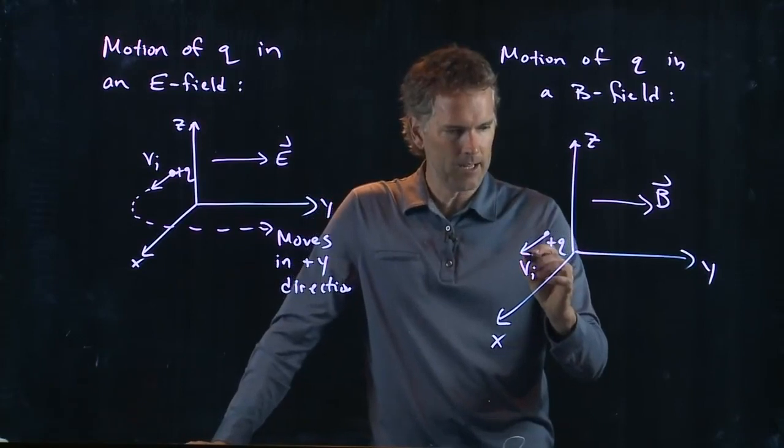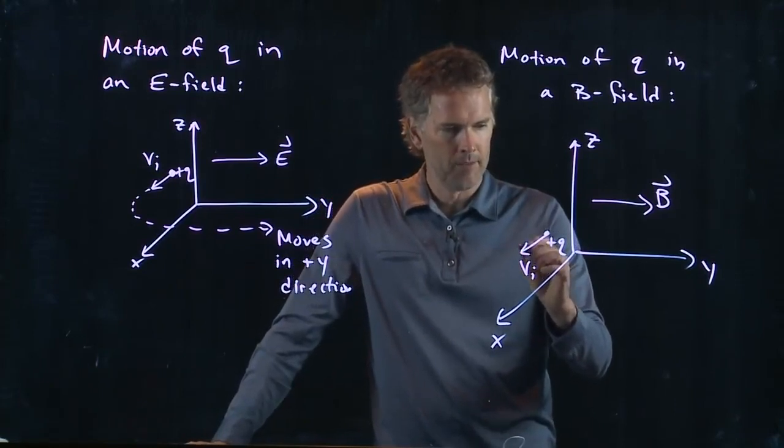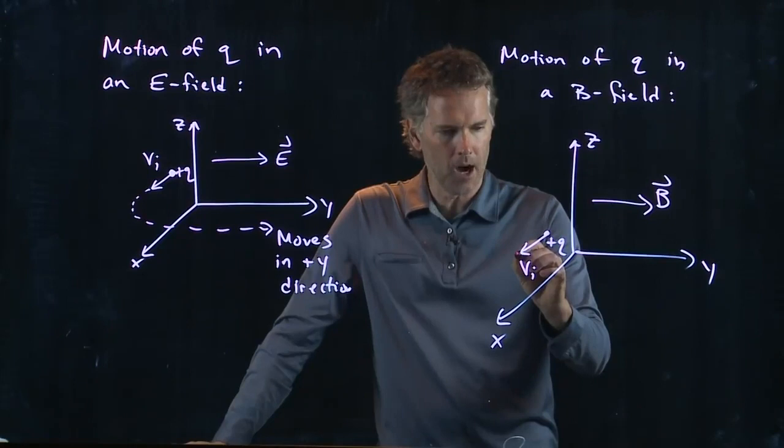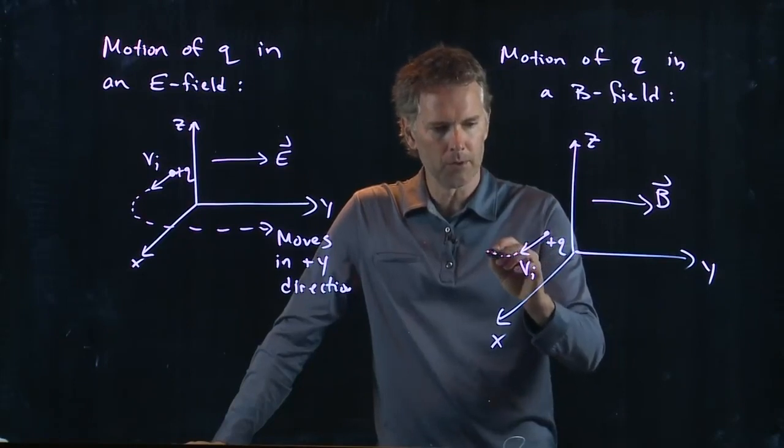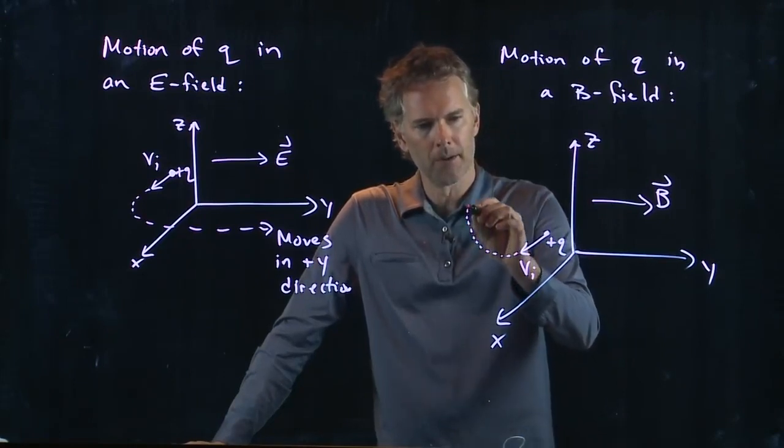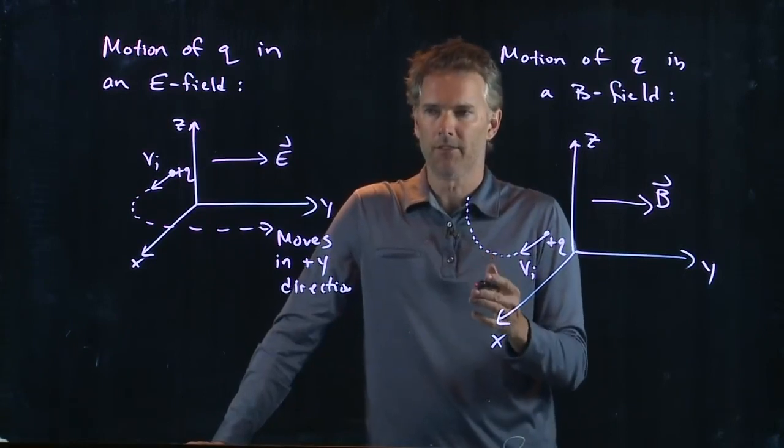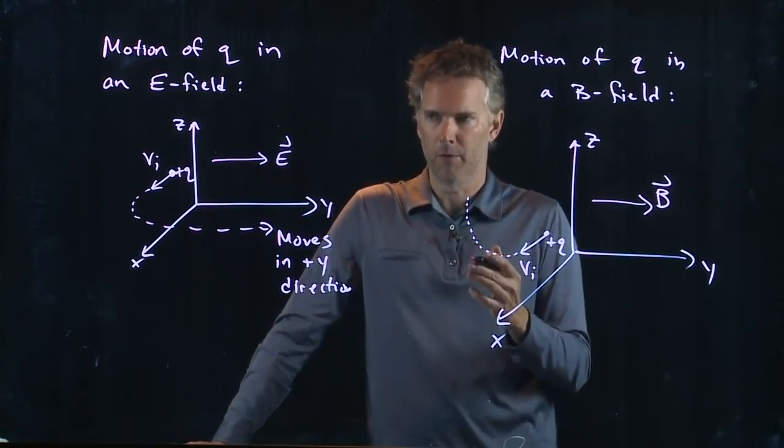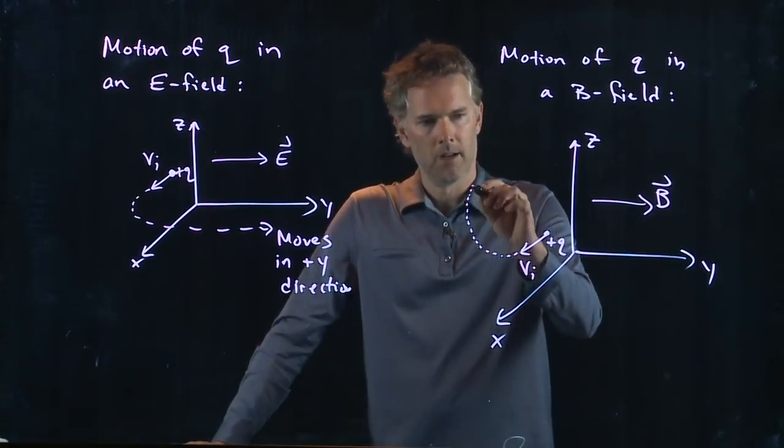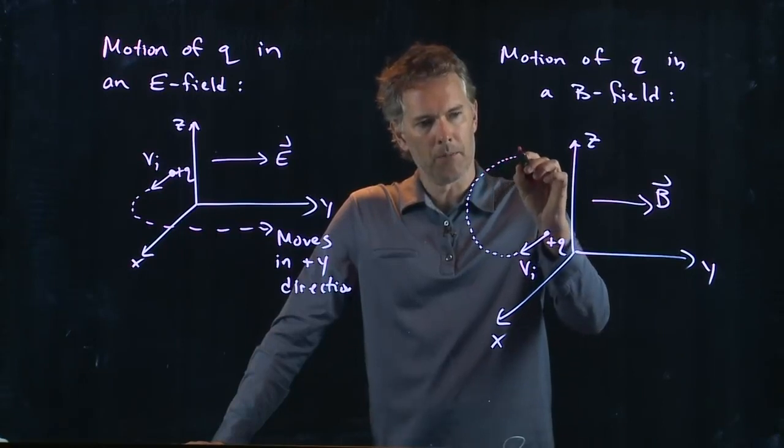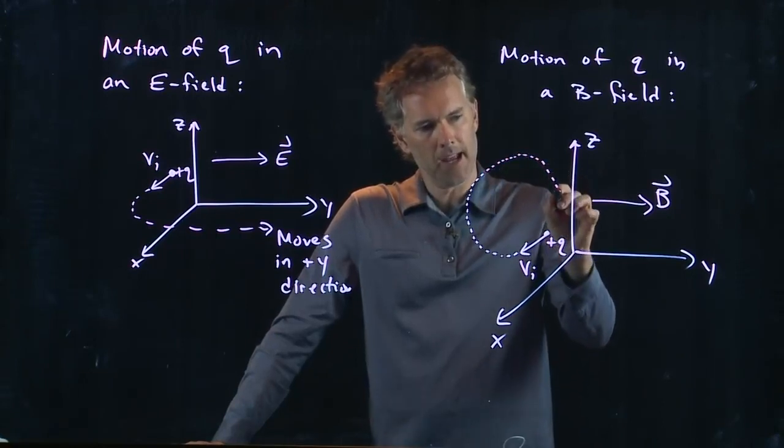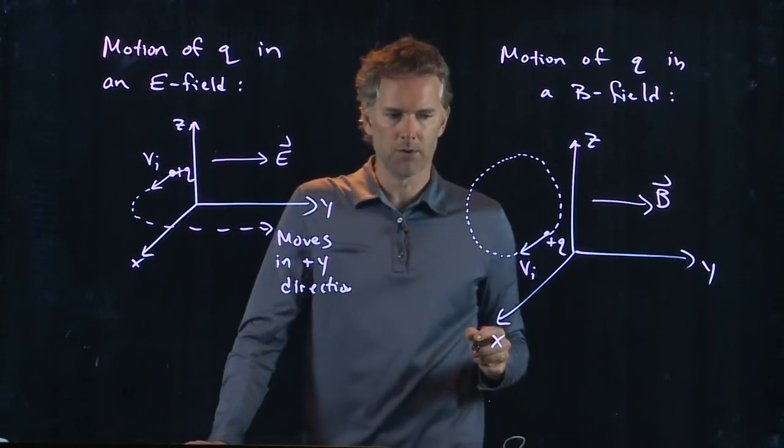What you should get is the following. V cross B is going to get me a force that's going up. And so it's going to start bending up. And now when it's going up, it's going to feel a force to the right. And then when it's going back, it's going to feel a force down. And it eventually will come back around to where it started.